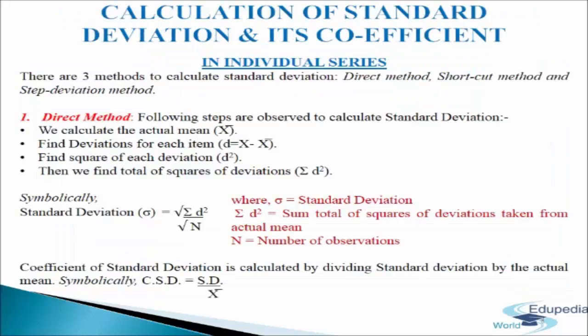Standard deviation and its coefficient can be calculated in individual series, discrete series, and continuous series. First we will discuss individual series. In individual series there is no frequency given against the value of variable x, and we need to arrange the data in ascending or descending order. There are three methods to calculate standard deviation: direct method, shortcut method, and step deviation method.